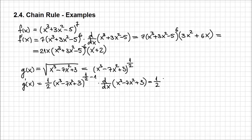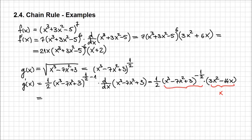We're going to have 1/2 times x to the power 3 minus 7x squared plus 3, at power minus 1/2, and the derivative of that expression is going to be 3x squared minus 14x. Now let's reorganize this expression in a nicer form. We try to convert these negative exponents into positive ones by putting the expression in the denominator.